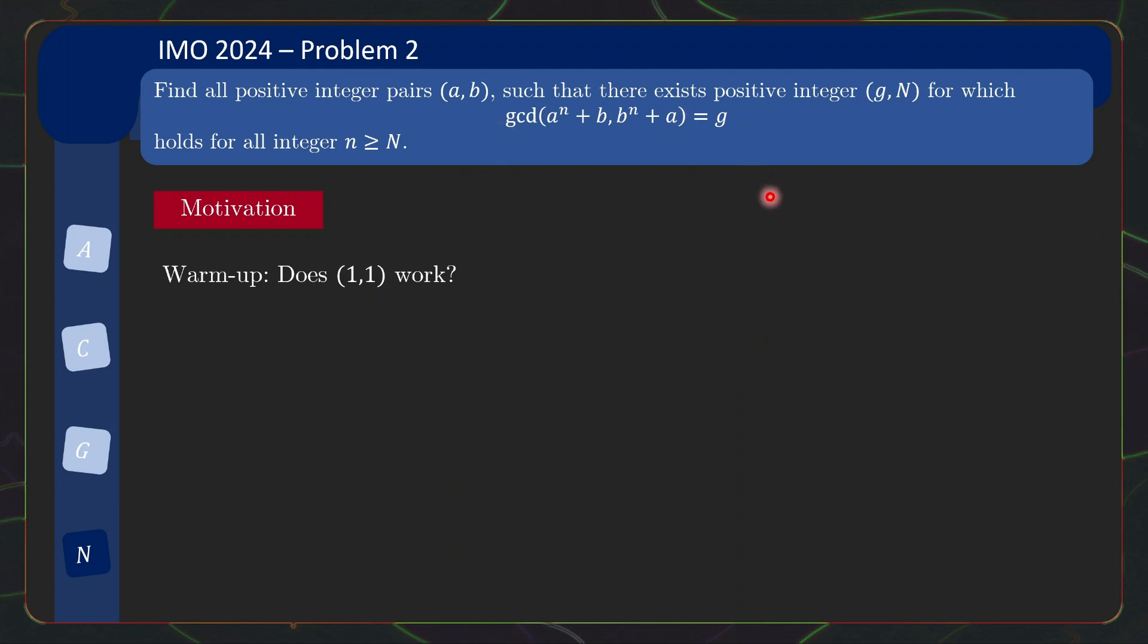The first natural thing to try is whether (1,1) works. Well indeed, the gcd is just going to be equal to 2 for all values of n. So obviously it's going to be eventually constant.